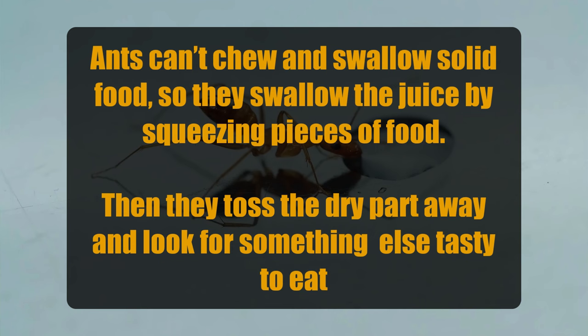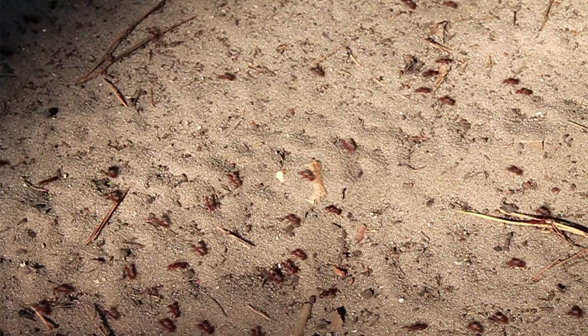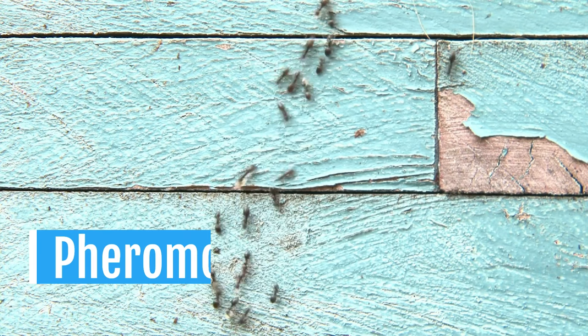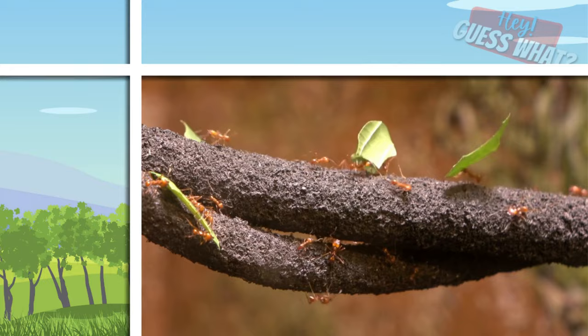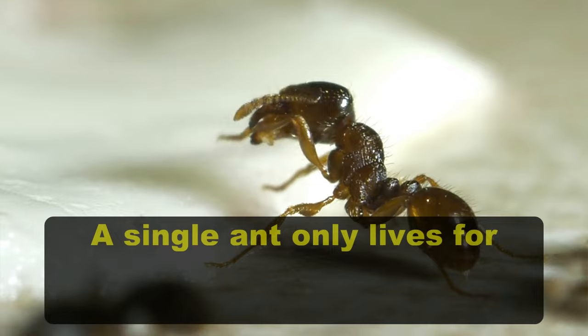Did you know that ants don't have lungs? They actually breathe through tiny little holes that cover their body. When ant colonies need to move, find food, or sense there is danger nearby, they leave a special trail with a scent called pheromones so other ants in their colony can follow. Ants have lived on Earth for more than 100 million years, but a single ant only lives for about 45 to 60 days.